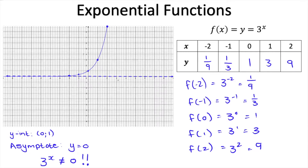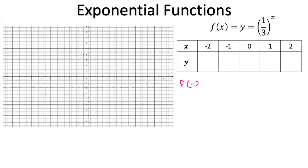Now we're going to draw a second graph to show you something else. Let's draw y equals 1 over 3 to the power of x. The x is still in the exponent, so it's still an exponential function. Let's plug in x equals negative 2: we get 1 over 3 to the power of negative 2. Using exponential laws, 1 over 3 can be written as 3 to the power of negative 1, which simplifies to 3 to the power of 2, giving us 9. Feel free to use your calculator, but do try to understand it.